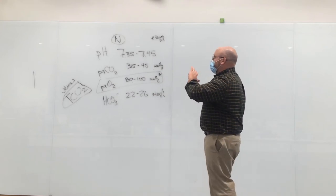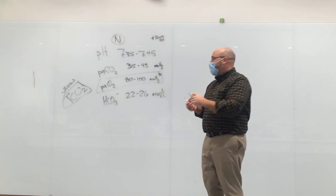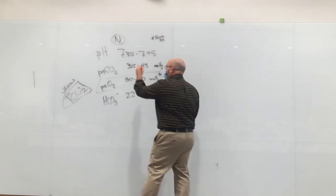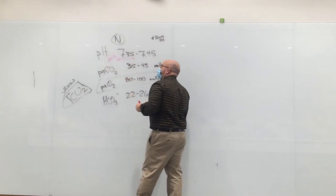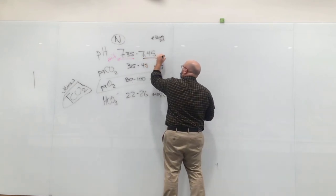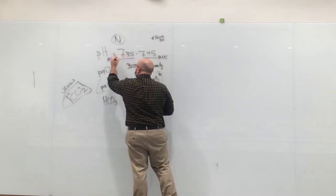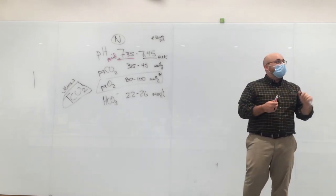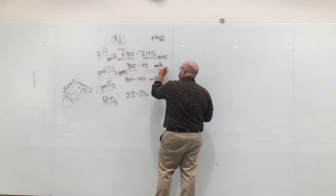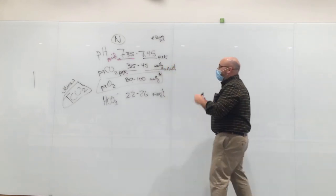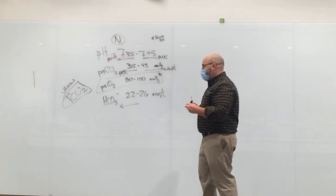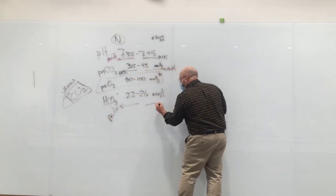Let's look at which side of these normal values causes acidosis or alkalosis. Less than 7.35 is acidosis; greater than 7.45 is alkalosis. For CO2: less than 35 is alkalosis, greater than 45 is acidosis — the exact opposite of pH. PaO2 has nothing to do with acid-base balance. Bicarb less than 22 is acidosis; greater than 26 is alkalosis.